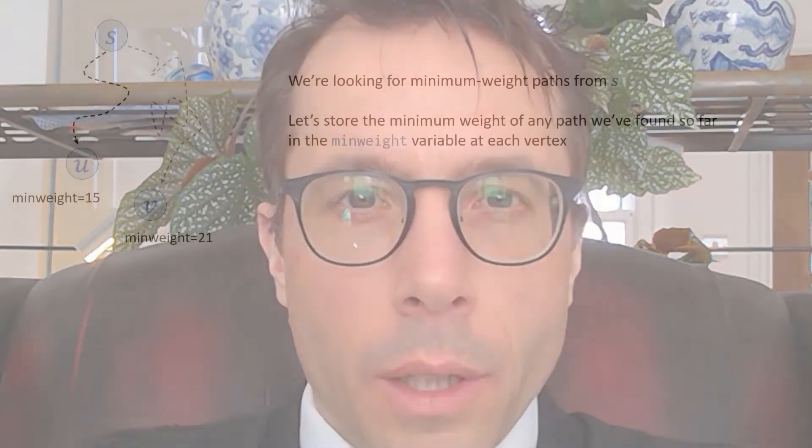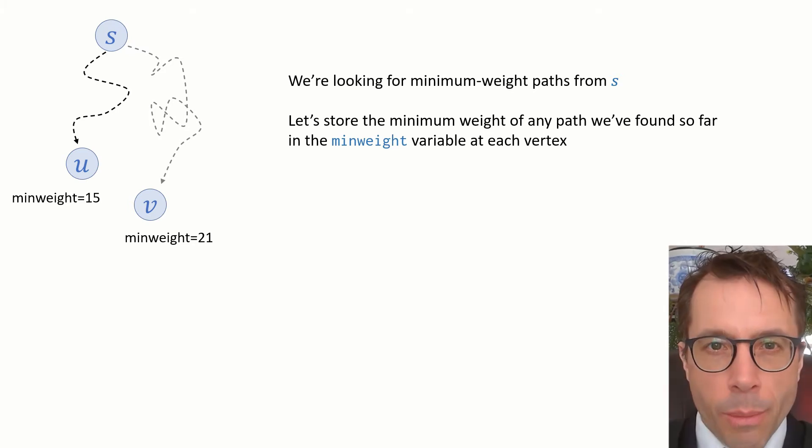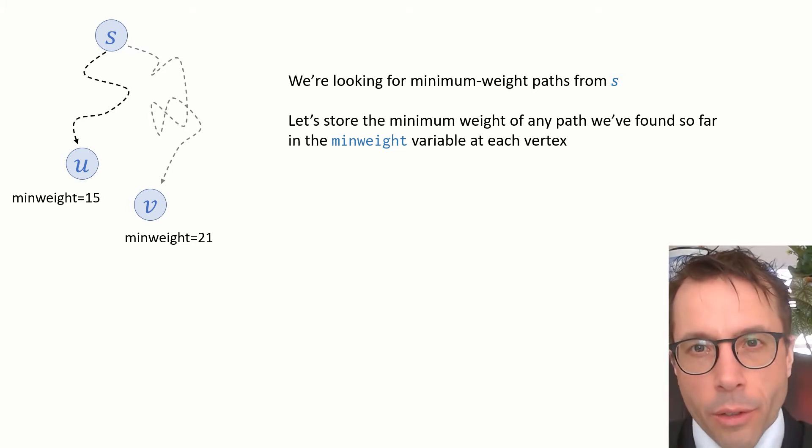So what should we do? Let's start with something that you may have spotted while you were running Dijkstra's algorithm. Let's suppose we're part way through the algorithm, and we're trying to compute the minimum weight paths from s, and we're storing a value min weight at each vertex, showing the smallest weight of a path that we've found so far. Now, Dijkstra's algorithm has an update step, which works like this.